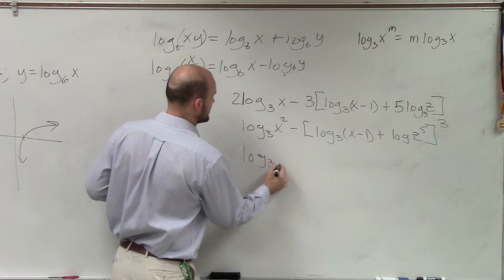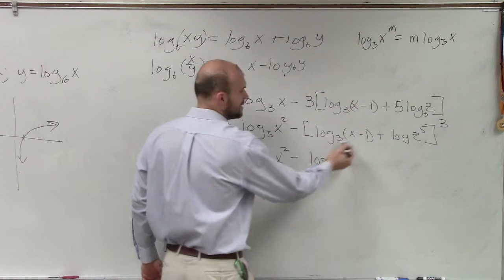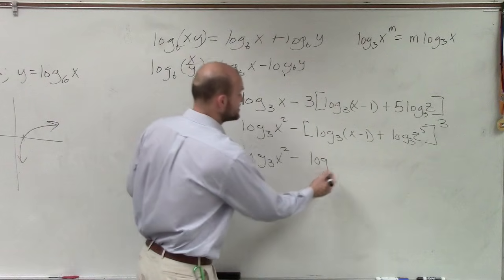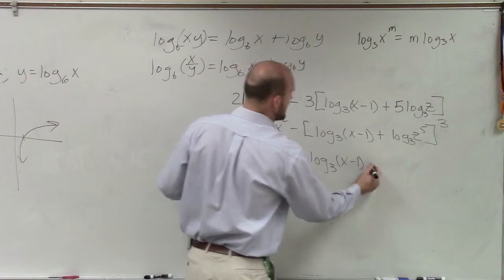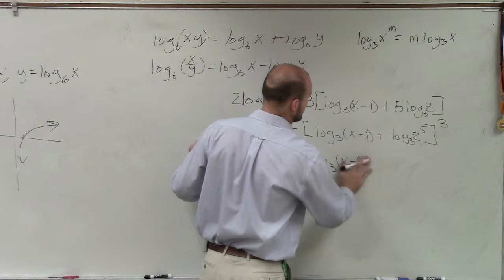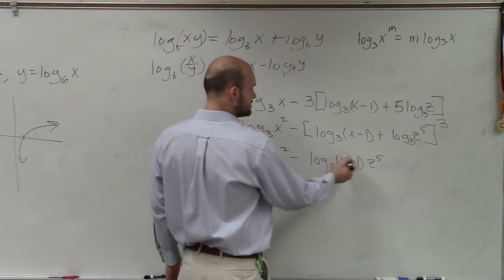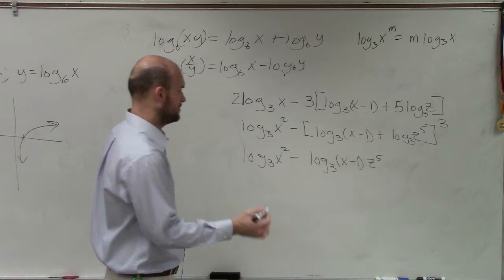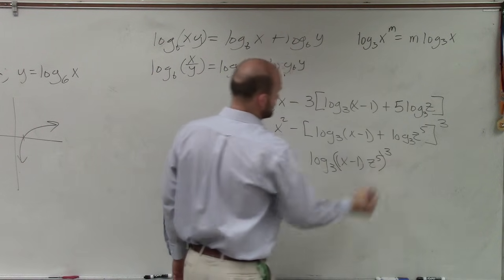Log base 3 of x squared minus, this is now going to be log. Notice how they're both base 3. Sorry, I keep forgetting to write that. Both base 3, so then this is going to be log base 3 of x minus 1 times z to the fifth. And then that is being raised to the third power.